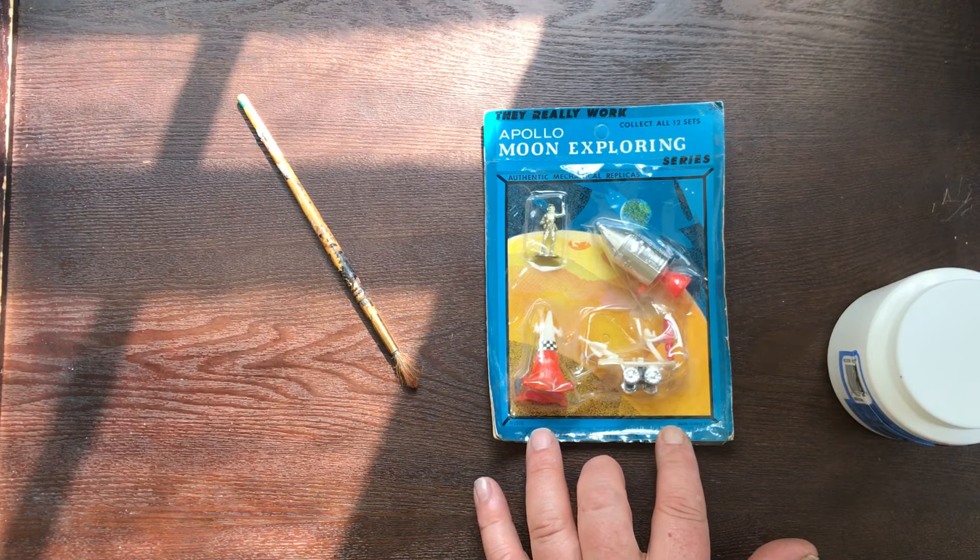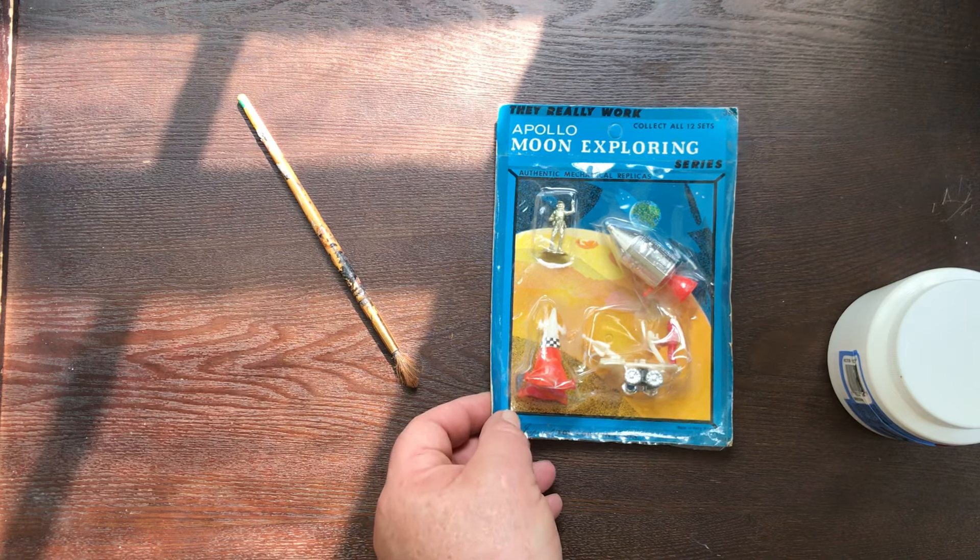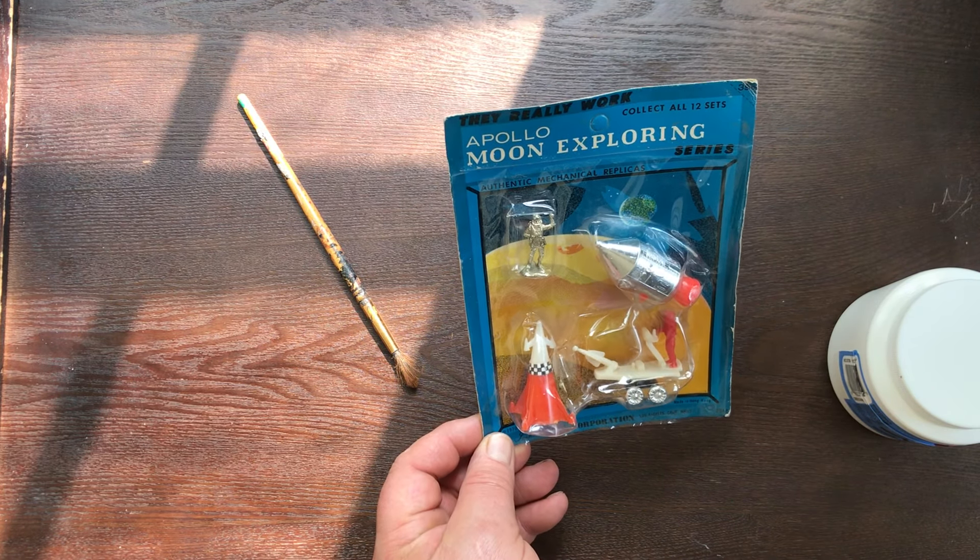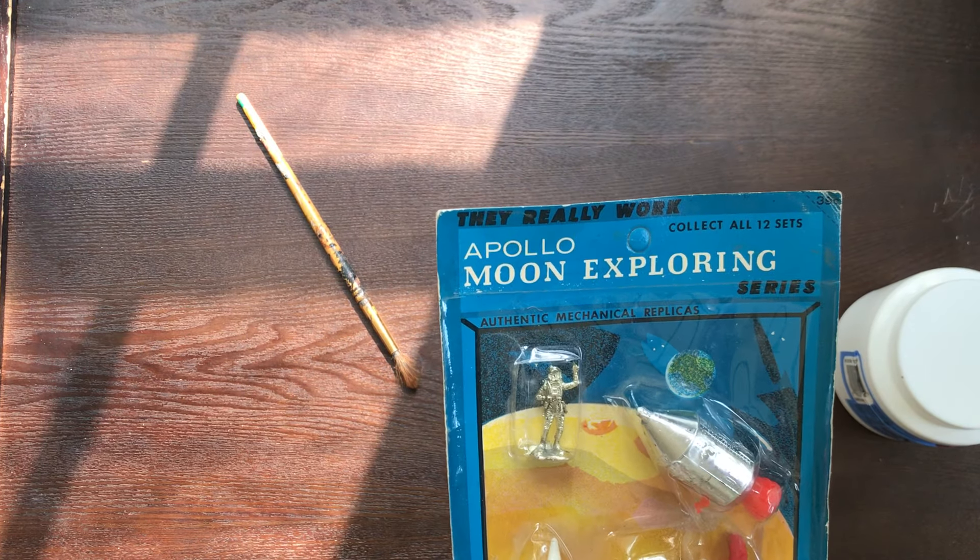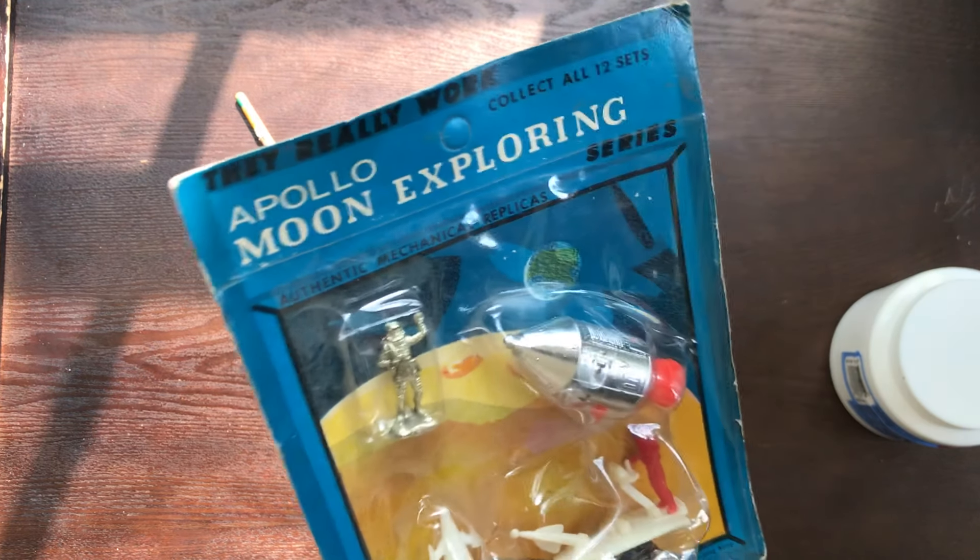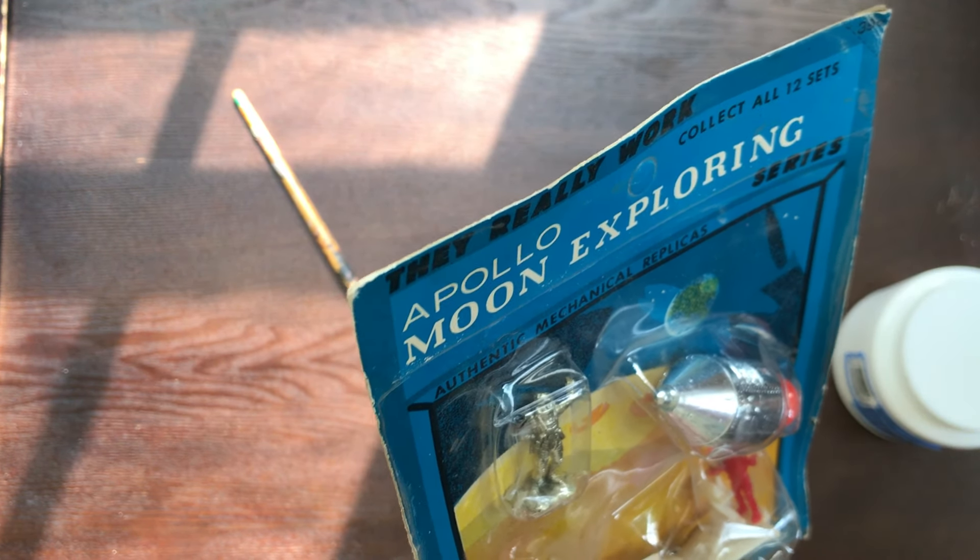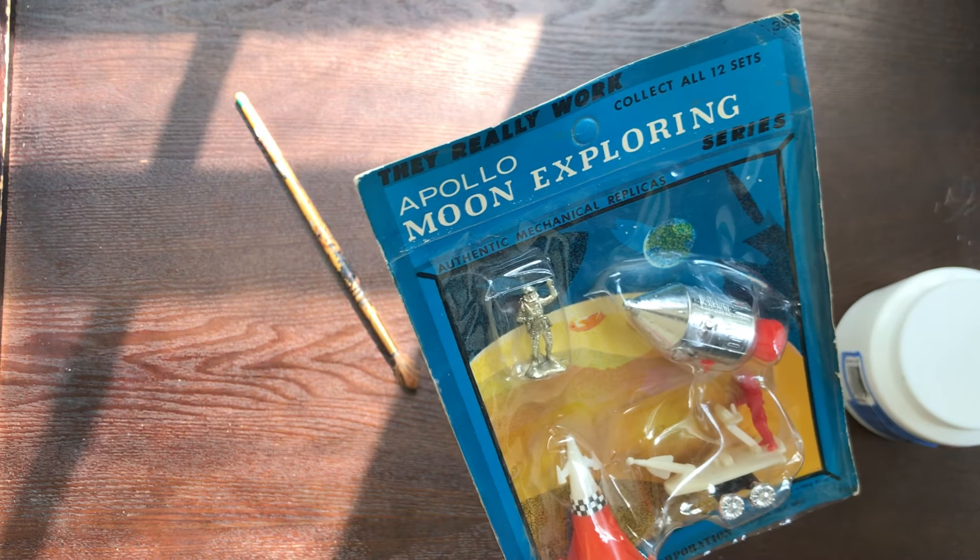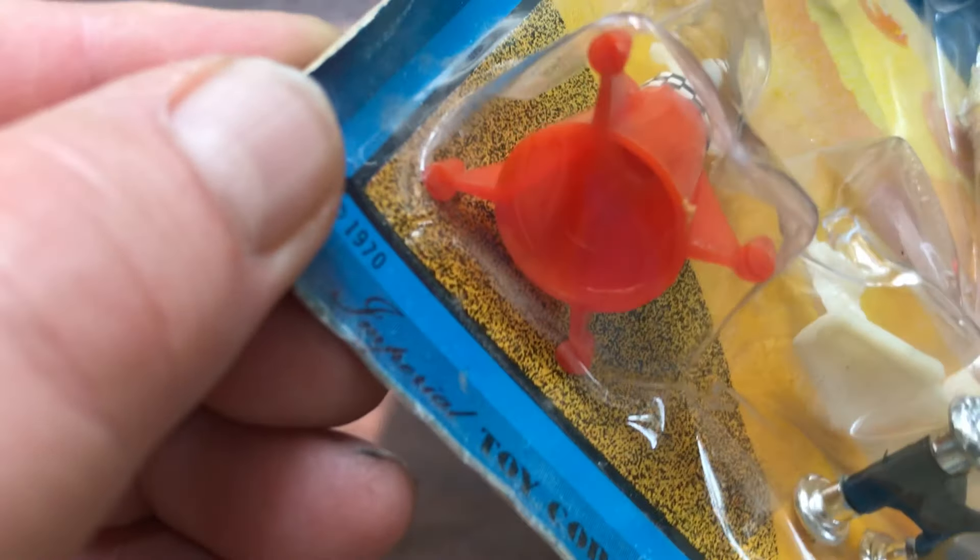This has existed since 1970. It's obviously the Apollo Moon Exploring Set 304D, as in David, not B as in boy. I've been saying it wrong for a couple of years. Here's the 1970 date, right there on the corner.